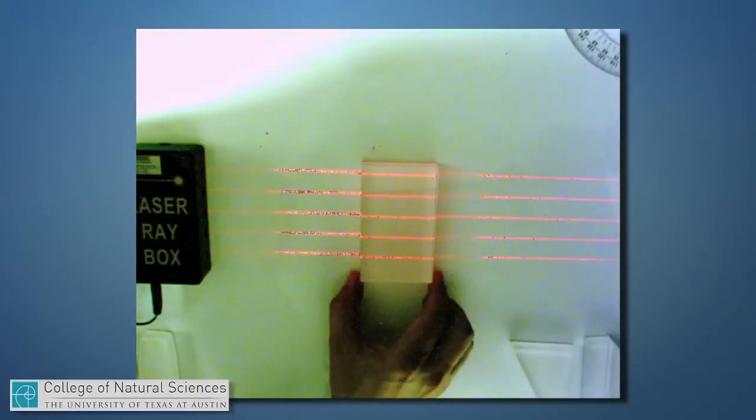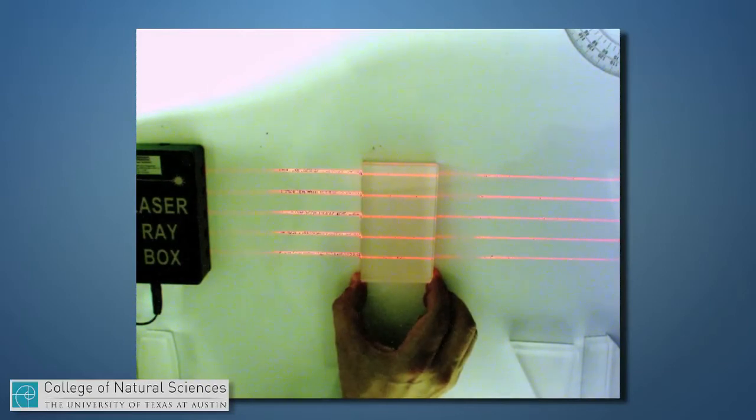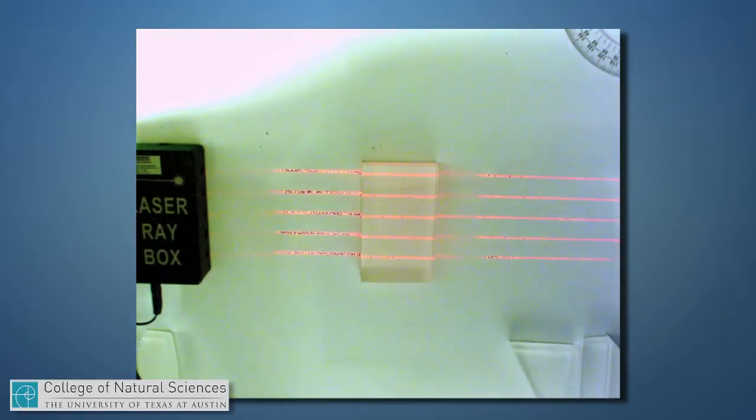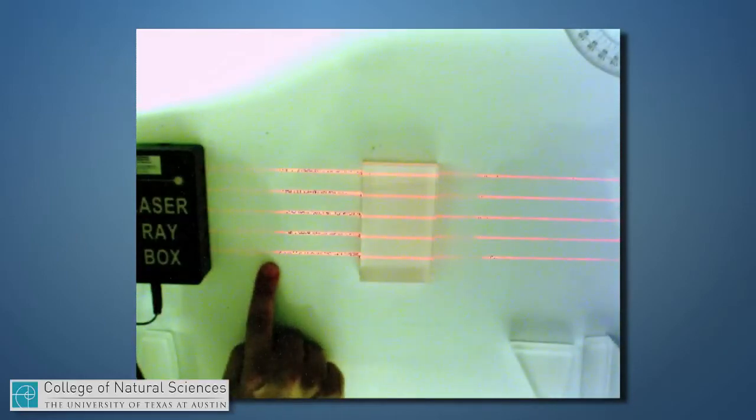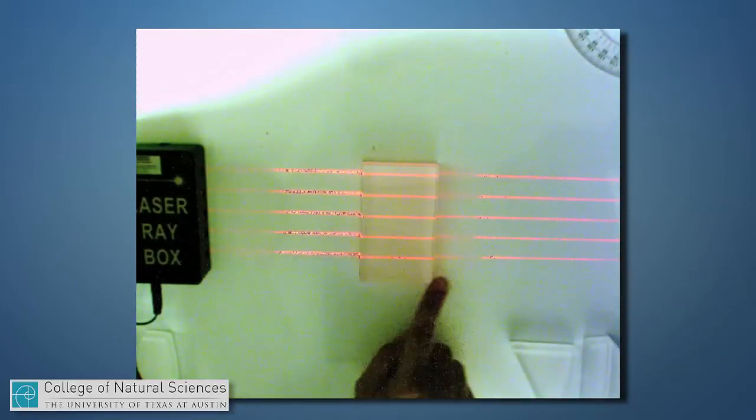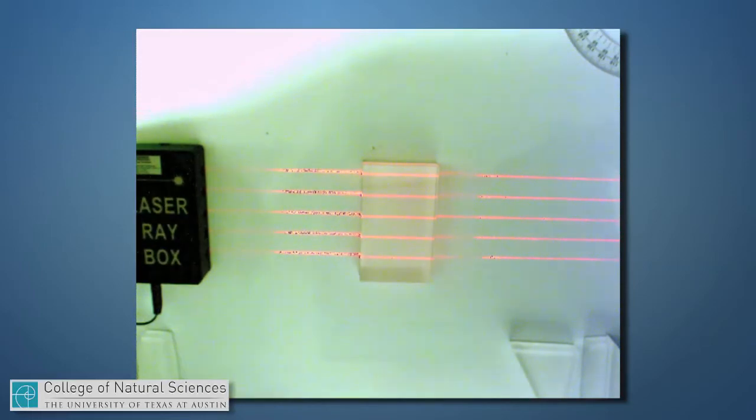I'm showing here a piece of clear plastic, and there are four or five sets of laser rays passing right through it. This plastic is what we would call transmitting the light. In other words, it's allowing light to travel from the left side of the screen through the plastic and onto the right side, more or less unperturbed.